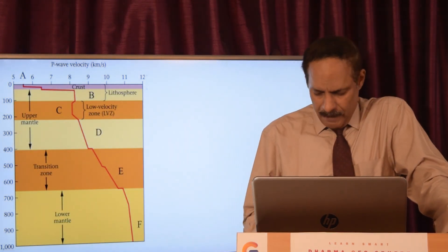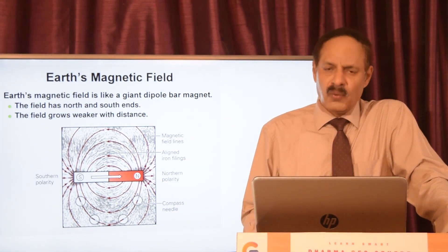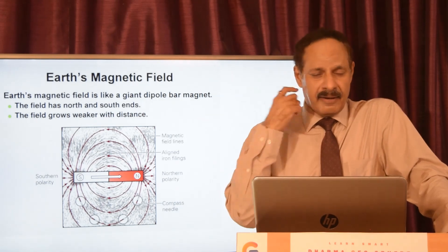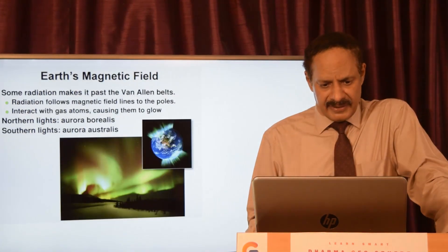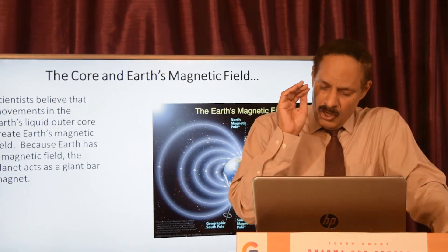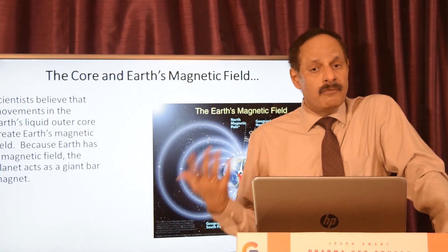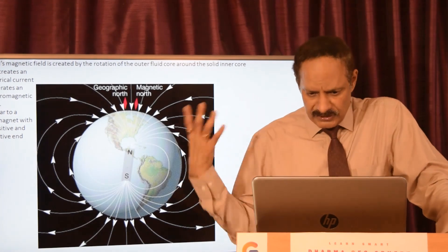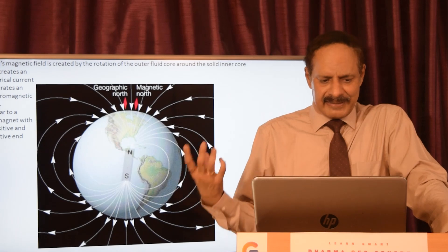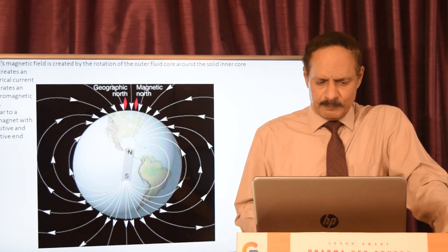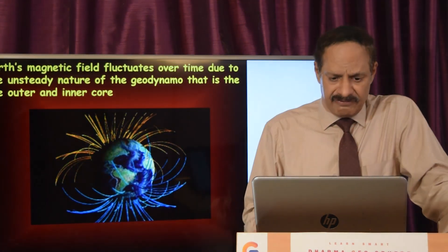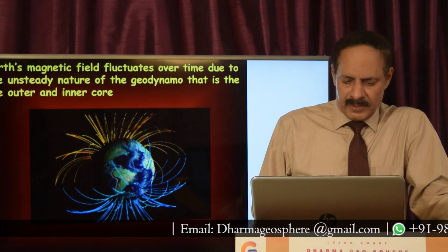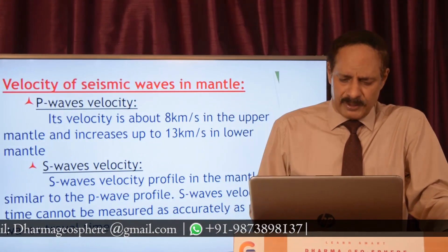Then the Earth's magnetic field — as you know, it is caused by the outer core rotating around the inner core. The inner core creates a magnetic field that acts like a bar magnet. This is an important diagram to draw not only for physical conditions of the Earth but also for principles of geomagnetism. The magnetic field is created by the rotation of the outer fluid core around the solid inner core, which creates an electric current generating an electromagnetic field similar to a bar magnet with positive and negative poles. The Earth's magnetic field fluctuates over time due to the unsteady nature of the geodynamo in the outer core.